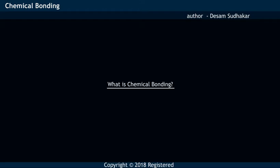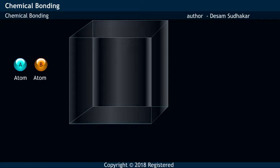What is chemical bonding? Atoms in their original state have high potential energy that is unstable in nature